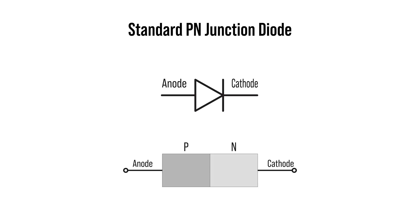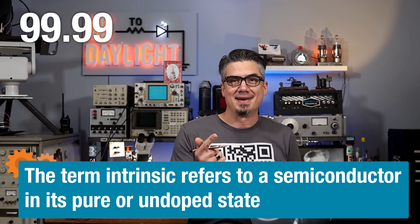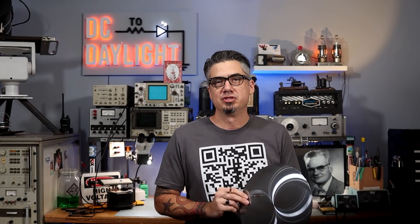In order to understand Zener operation, we first need to understand the standard P-N junction, or small signal diode. Diodes are composed of two differing semiconductor materials, P and N, which in their initial state are composed of a silicon grade semiconductor substrate. For example, this 300 millimeter intrinsic wafer, which is 99.9999999% pure silicon. Impurities are added to two specific regions, which give them either a surplus or deficiency of electrons. The process of adding these impurities is called doping.